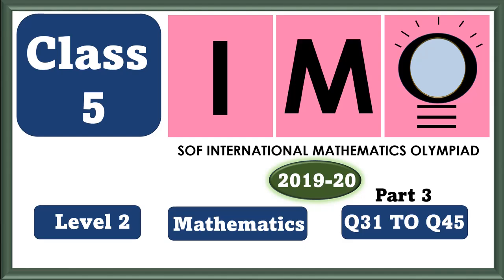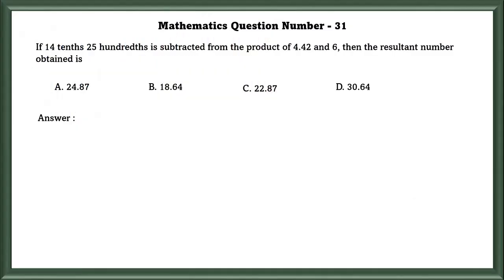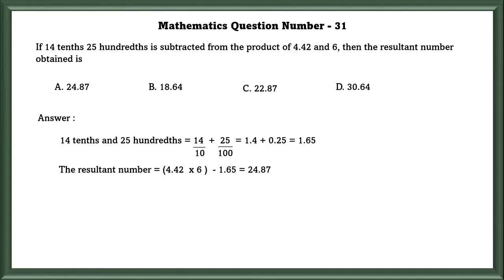Class by IMO level 2. Mathematics question number 31. If 14 tenths 25 hundredths is subtracted from the product of 4.42 and 6, the resultant number obtained is: 14 tenths and 25 hundredths equals 1.65, and the product of 4.42 and 6 subtracted by 1.65 equals 24.87. So the answer is A.